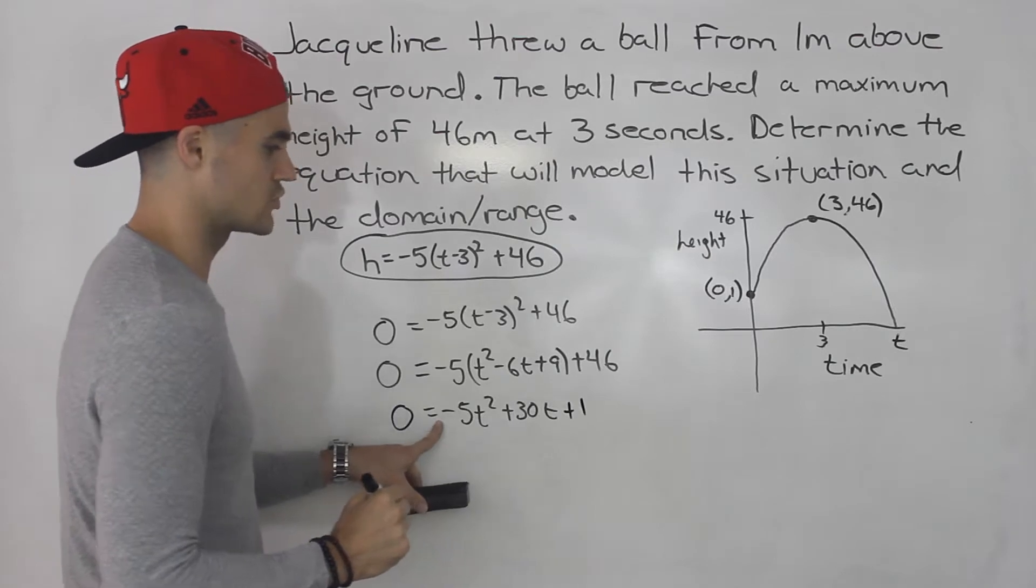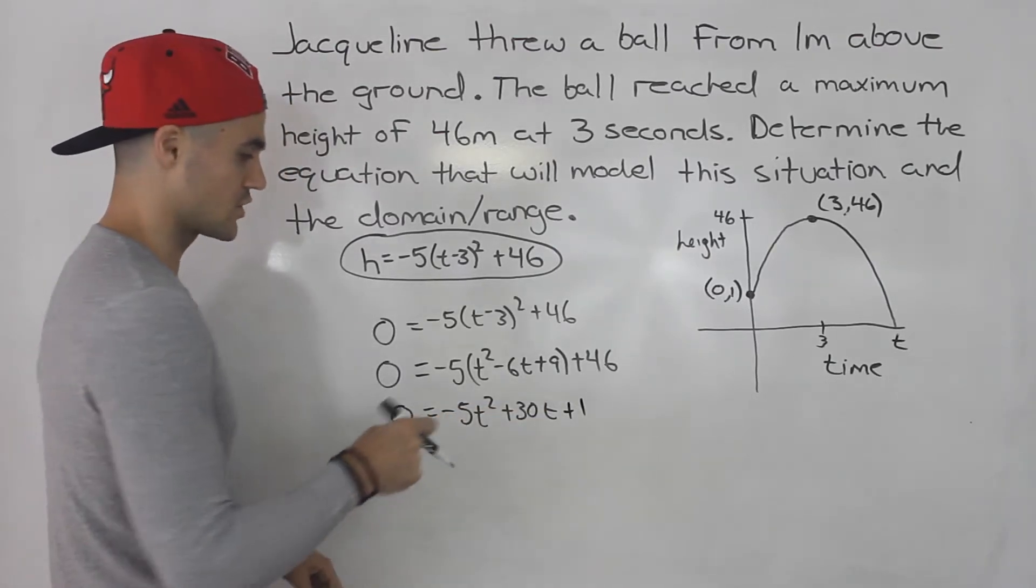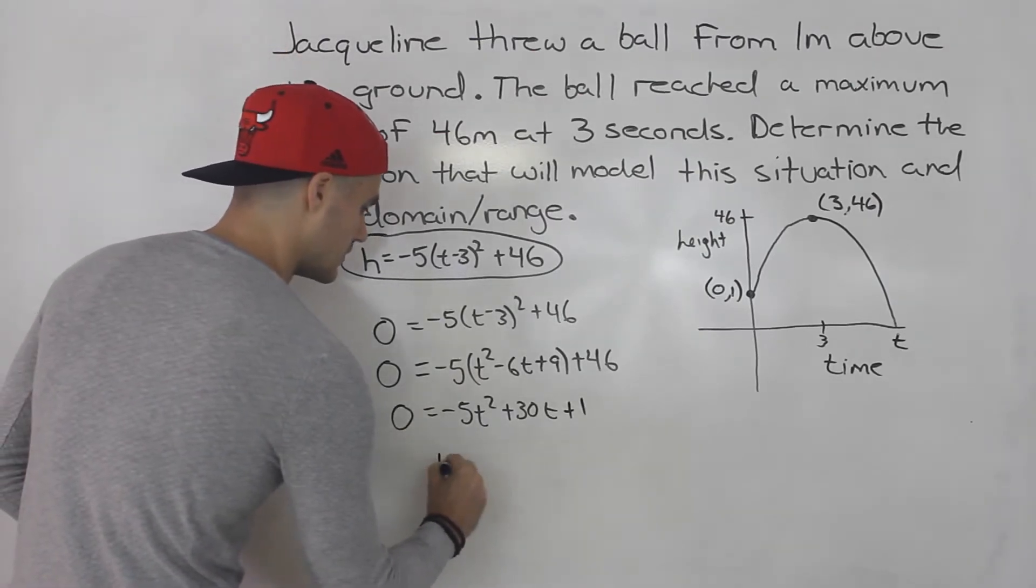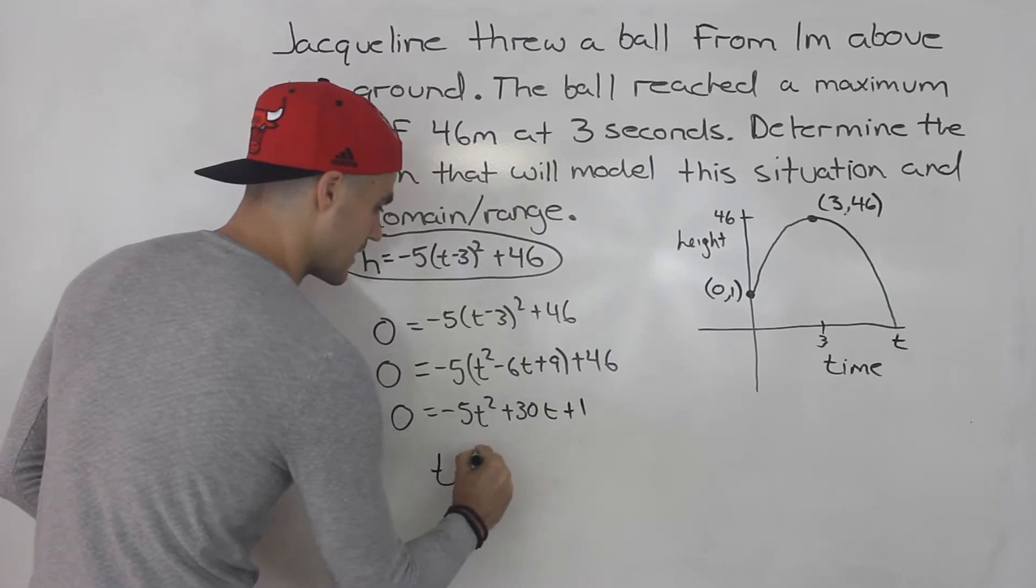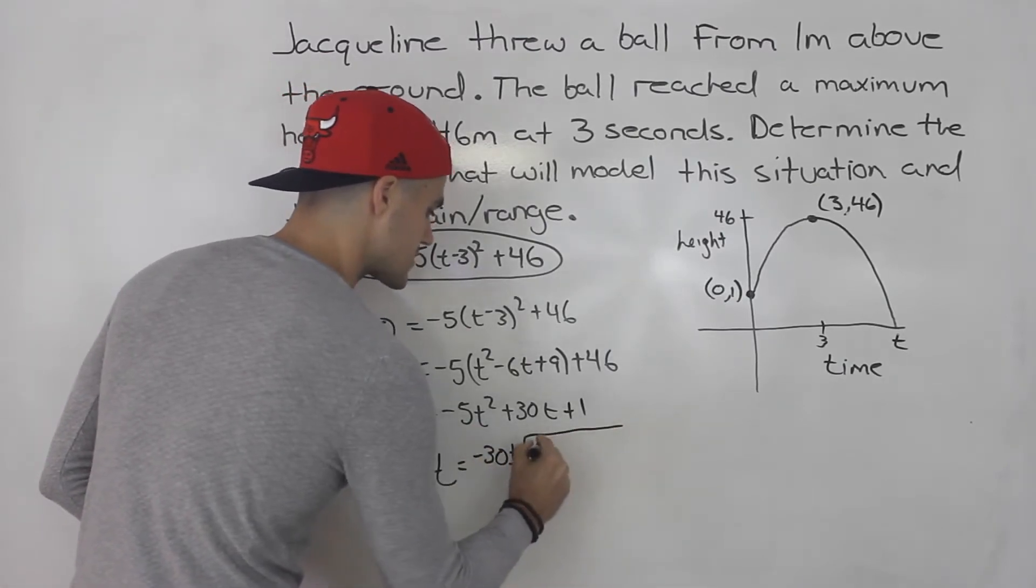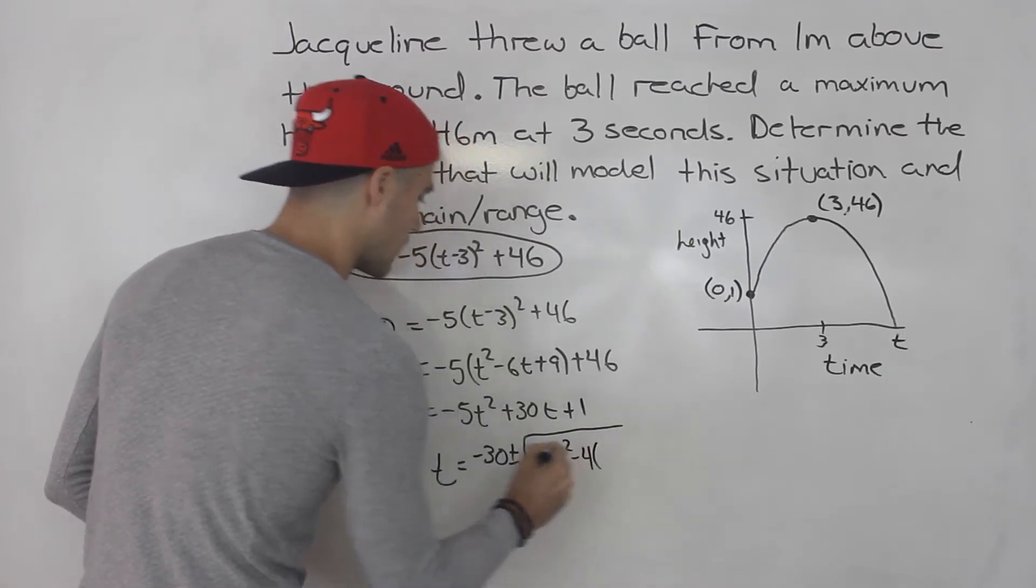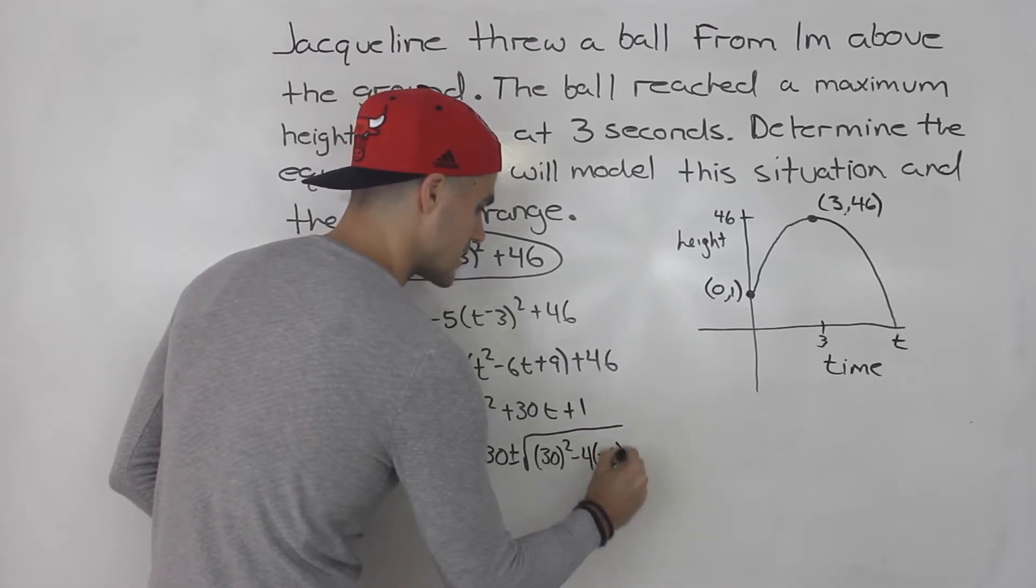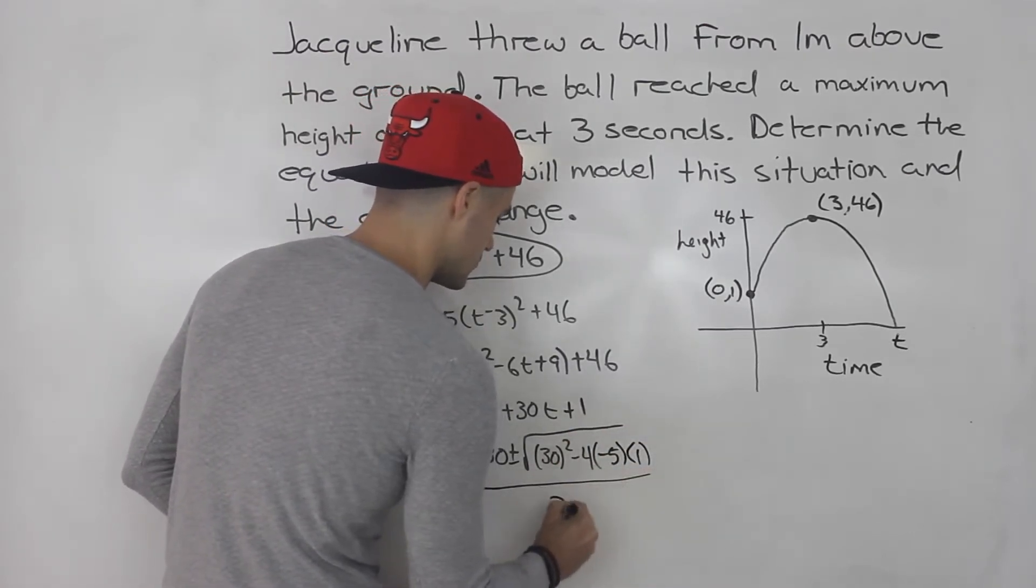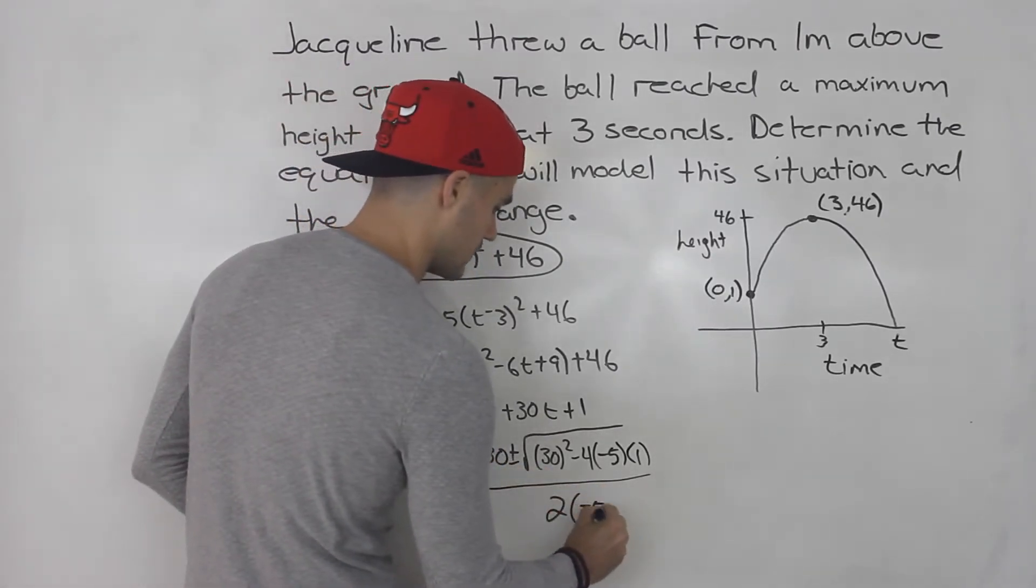And now we just have a quadratic equation to solve. And this is actually not going to factor smoothly. So you're going to have to throw this into the quadratic formula. So we know t is going to equal -b, so -30 plus or minus b² which is 30², minus 4 times the a value -5 times the c value positive 1, all over 2 times the a value of -5.